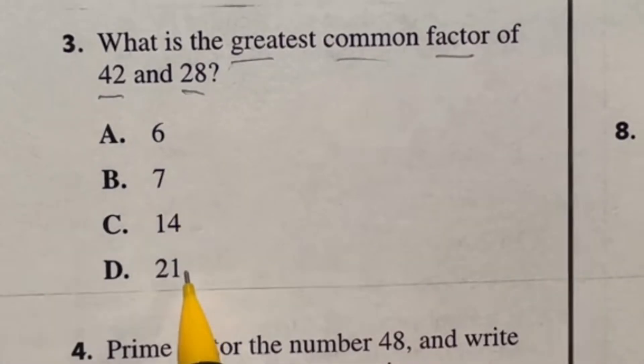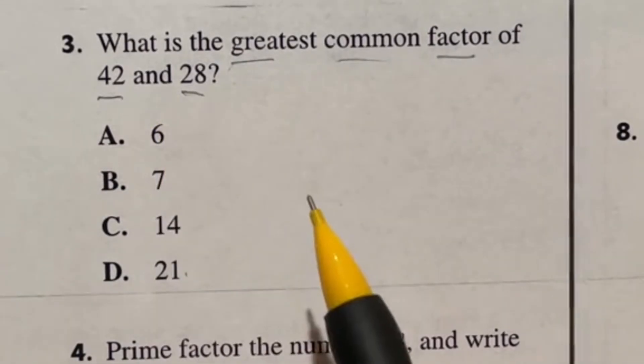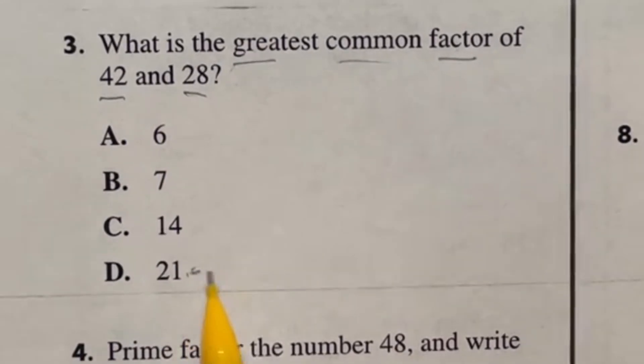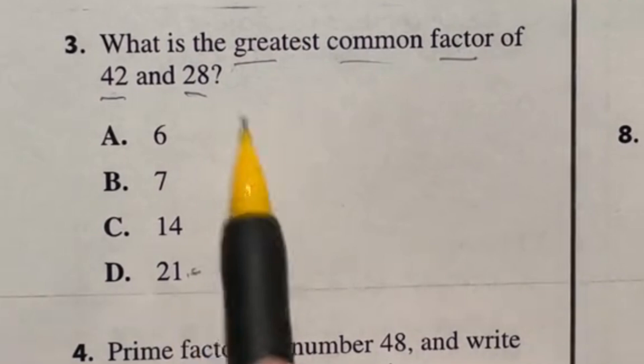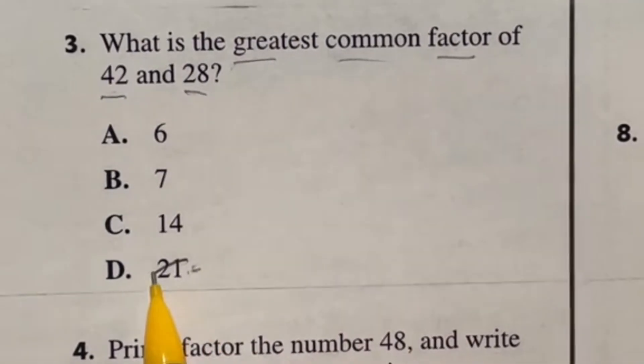So essentially, I can just start at the largest here, and once I find one that divides both, that will be my answer. So in this case, 21 does indeed divide 42, but it is too large to be dividing 28. So 21 is out.